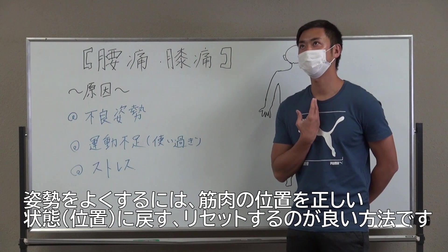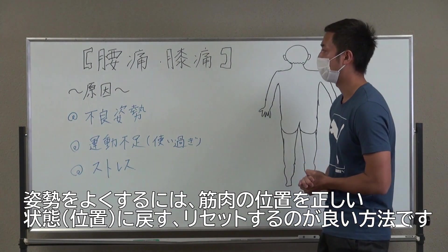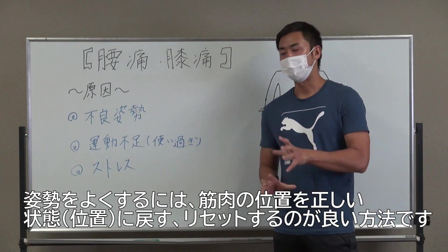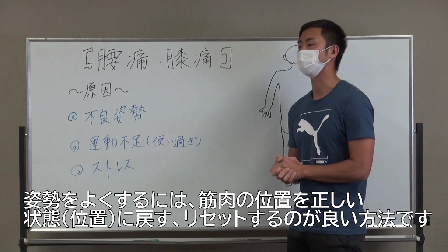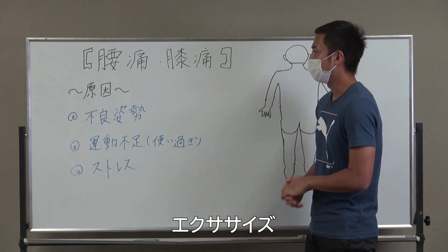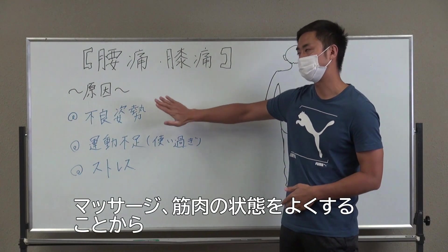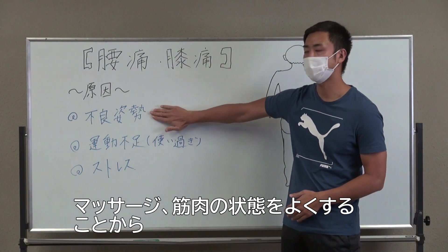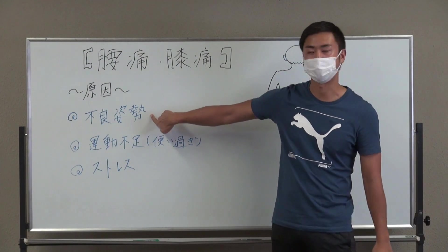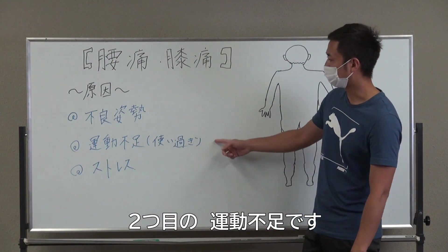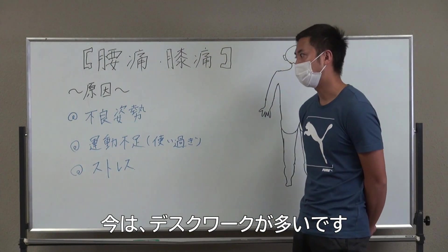姿勢を良くしようと思ってもなるものでもないです。意外と姿勢をピーンとしているのがストレスになっている場合もあるんですね。なので、姿勢を良くするということはやっぱり筋肉の状態を正しい状態に戻すリセットするということがすごく大事になります。エクササイズやストレッチ、マッサージも含めて、まずは筋肉の状態を良くするというところから始めていくことが一番大事になってきます。